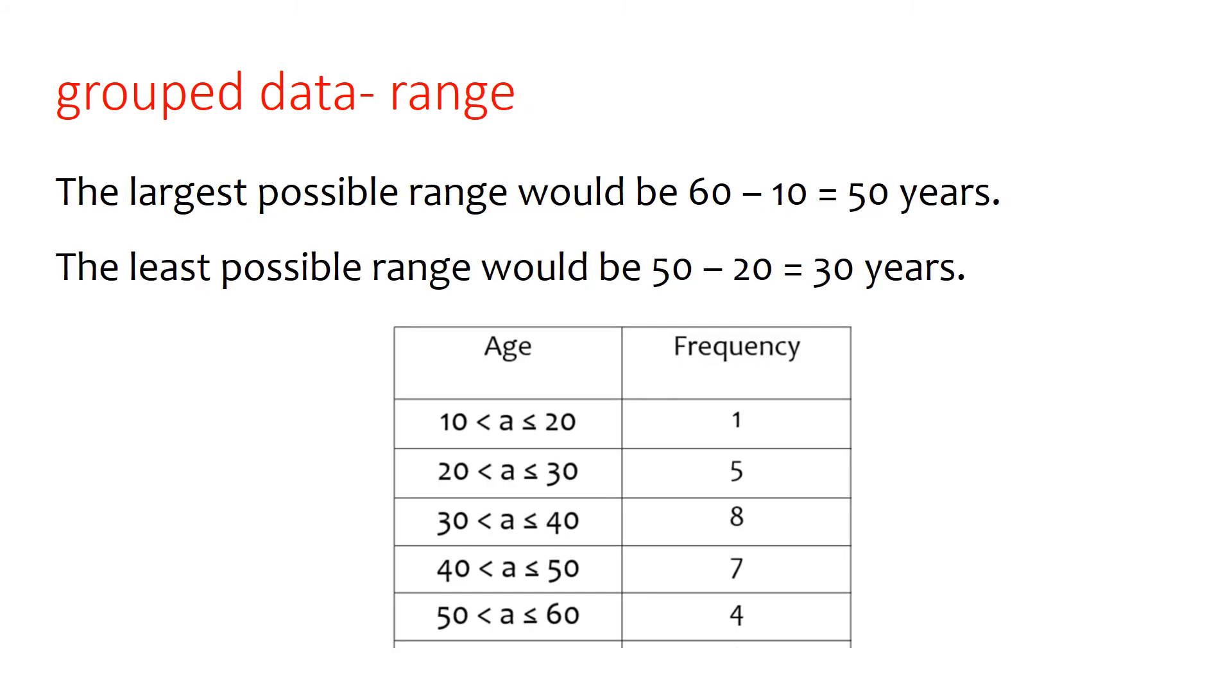Finally, the range here, you may be asked to find the largest possible range and the least possible range. So if first of all, we look at the largest possible range, we'll imagine that the youngest person could be 10 and the oldest person could be 60. So in which case the range would be 60 take away 10, which is 50.